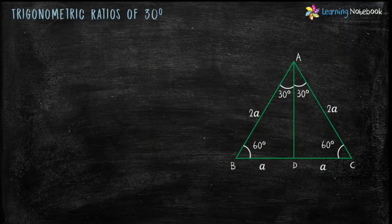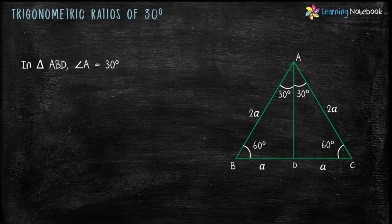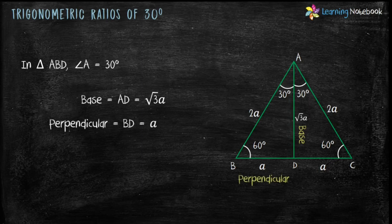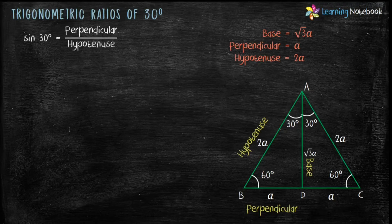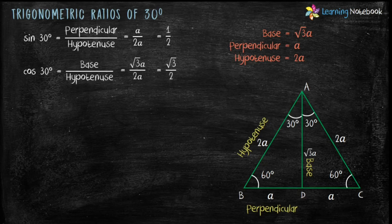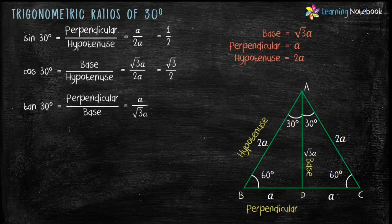Now to find trigonometric ratios for 30°, define base, perpendicular and hypotenuse in triangle ABD with angle BAD equals 30°. Base equals AD equals √3·a, perpendicular equals BD equals a, and hypotenuse equals AB equals 2a. Therefore sin 30° equals a upon 2a equals 1/2. Cos 30° equals √3·a upon 2a equals √3/2. Tan 30° equals a upon √3·a equals 1/√3.